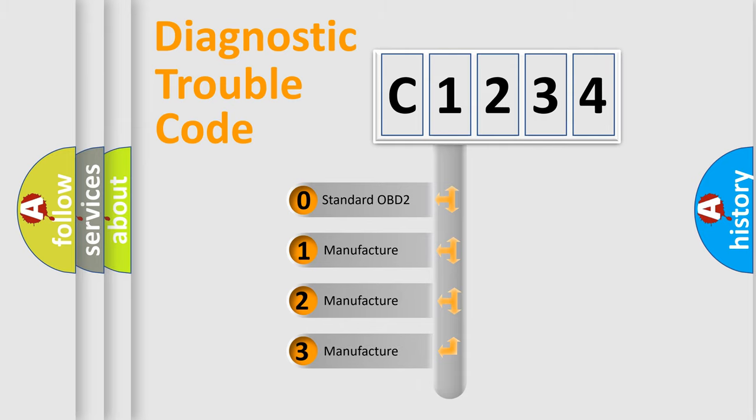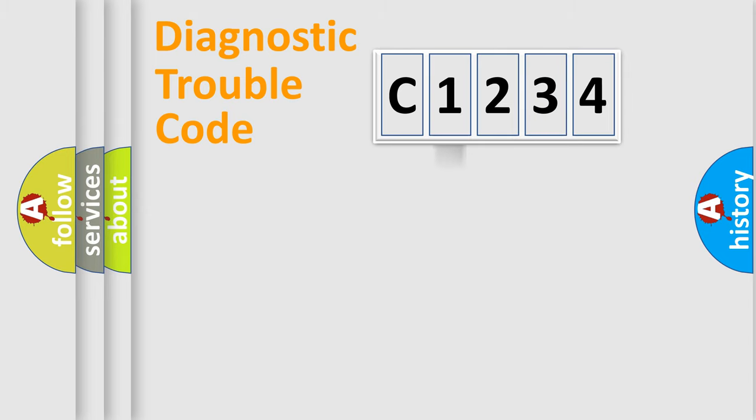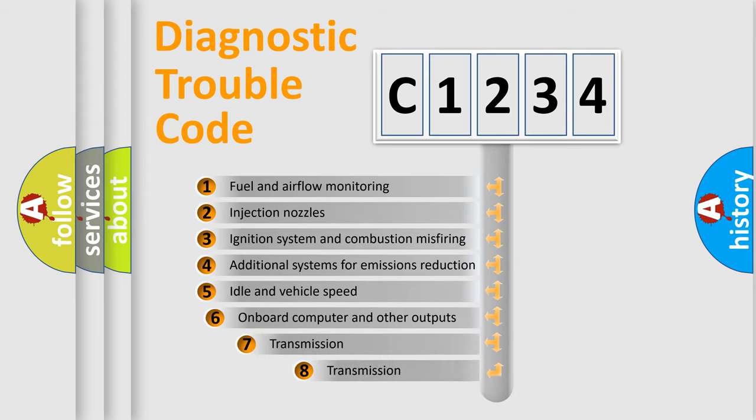If the second character is expressed as zero, it is a standardized error. In the case of numbers 1, 2, 3, it is a more precise expression of the car specific error.